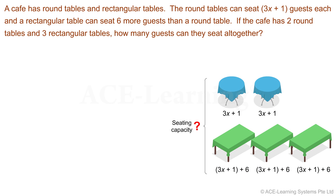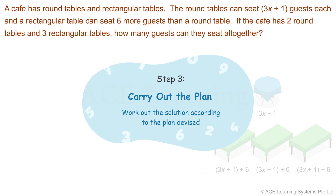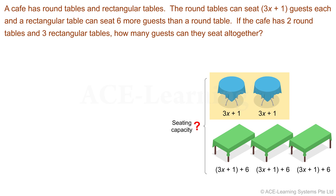With the above plan in mind, let's move on to the next step. Step 3: Carry out the plan. Work out the solution according to the plan devised. Now, one round table can seat 3x plus 1 guests.